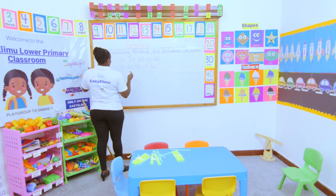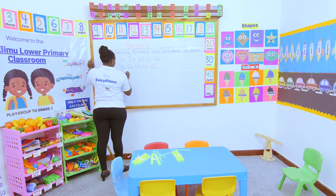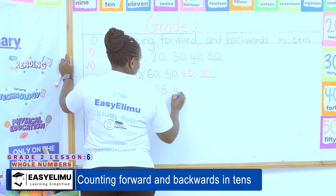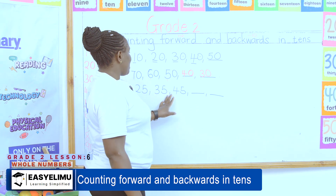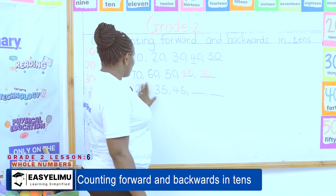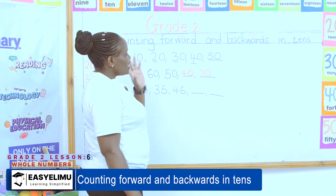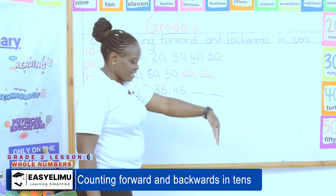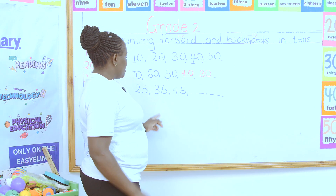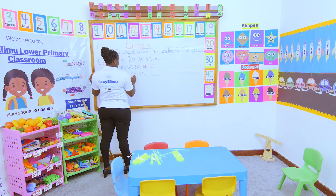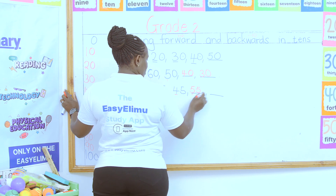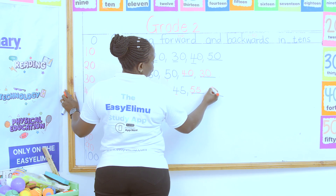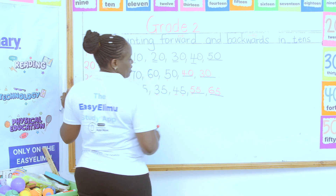Sometimes the numbers are interchanged — for example: 25, 35, 45. Now teacher, what happens when you've said it must have a zero? When the first number ends with five, all the other numbers must end with five. The only thing you check is whether the number is increasing or reducing. From 25 to 35, the tens digit goes two, three, four — so the next number is 55. Then from five you go to six, and the end digit stays five, so the next would be 65.